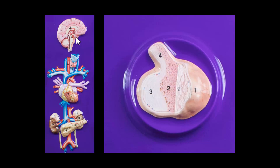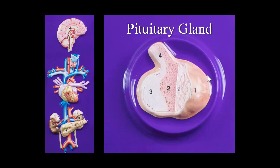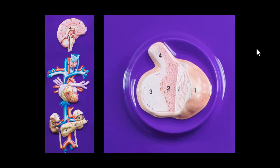Up here you're going to notice this little stalk and this little bean coming off of this part of the brain. This is a mid-sagittal section of the brain, and right here enlarged we see the pituitary gland. Another name for the pituitary gland is the hypophysis. It's going to sit in the sella turcica, specifically in the hypophysial fossa of the sella turcica — that's why it's called hypophysial fossa, because the old term for the pituitary gland is hypophysis. The little stalk that attaches the pituitary gland to the brain is called the infundibulum.